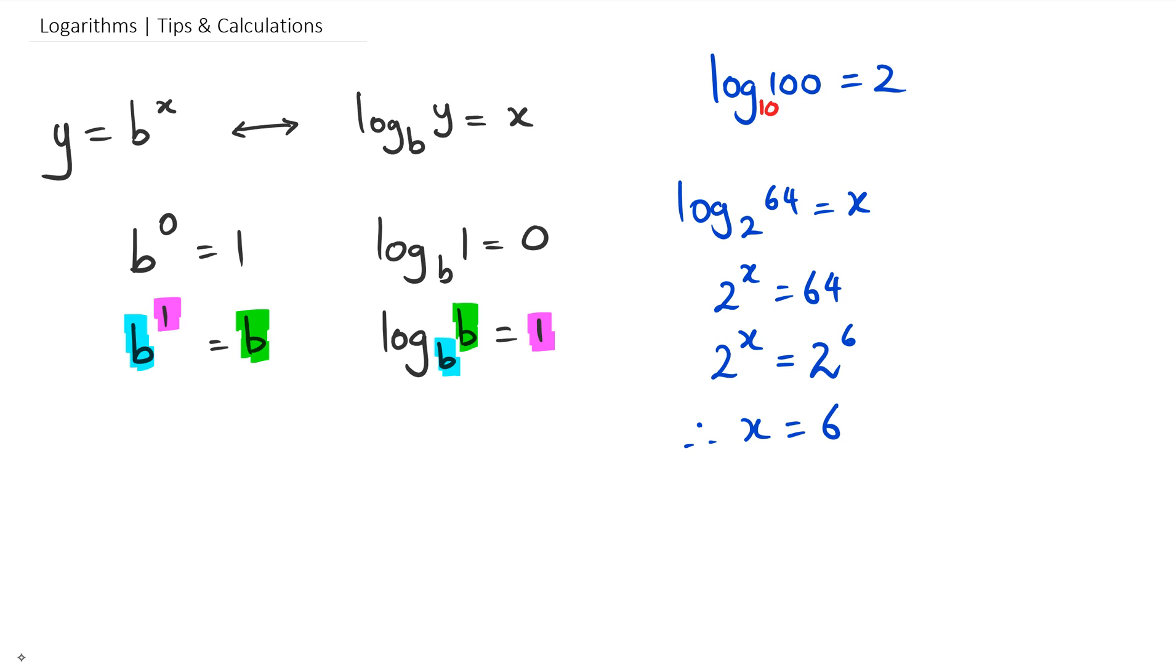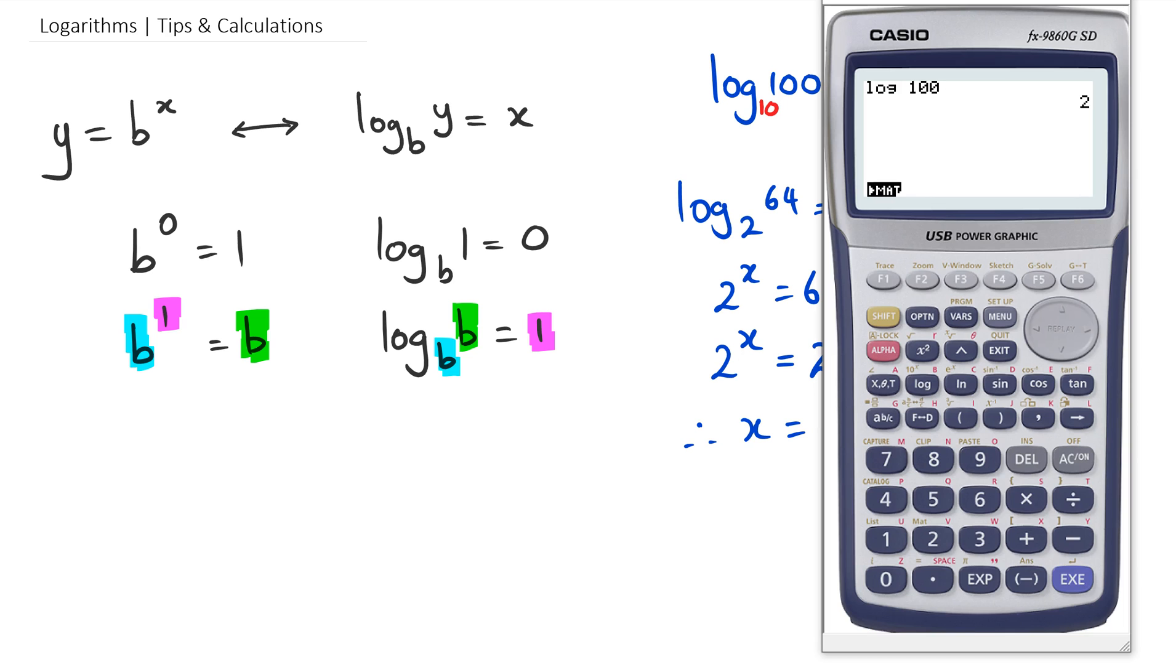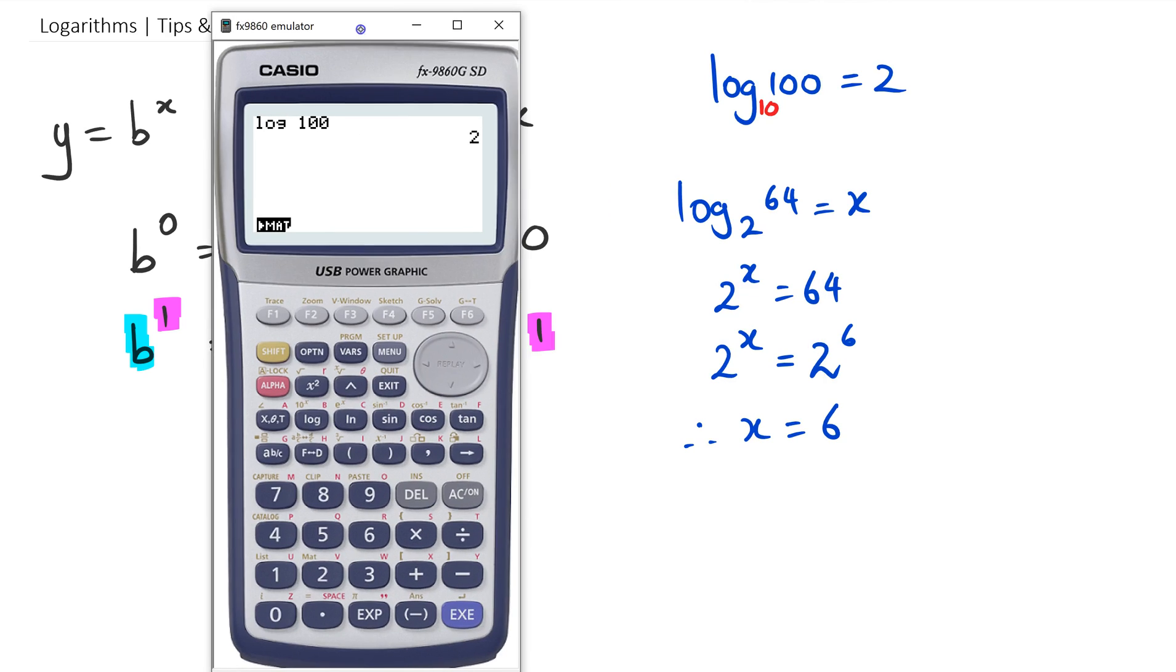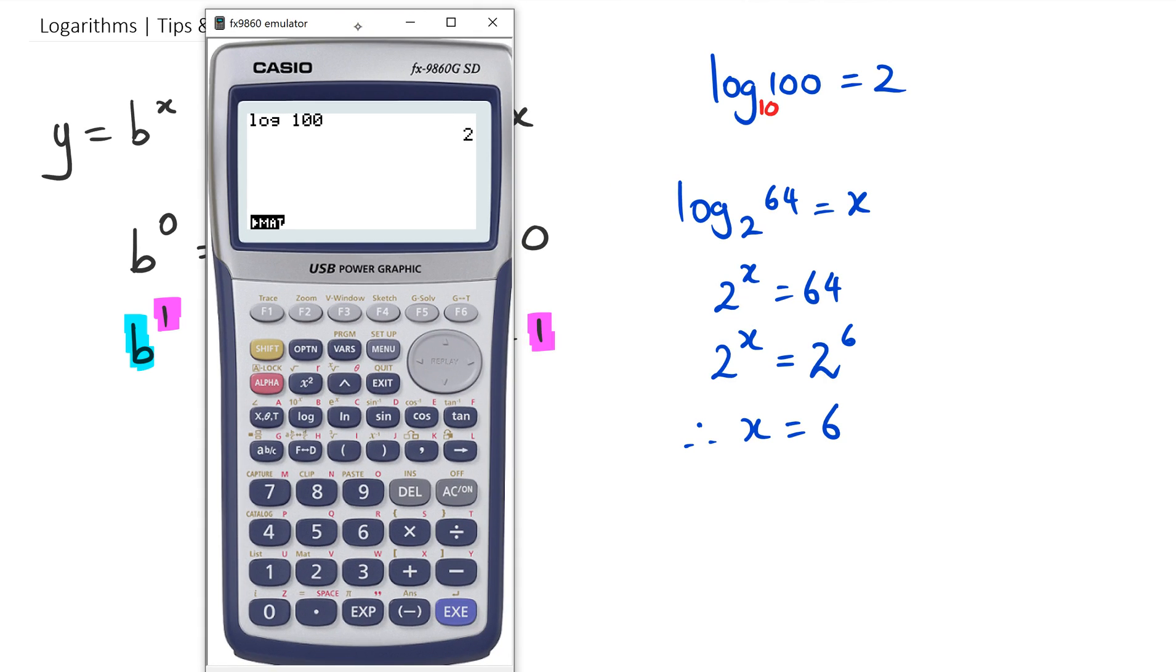But how do we do this in the calculator? If you ever want to calculate log₂ of 64, what you can actually do is just type in log of 64 divided by log of 2, and that actually gives us the answer of 6.